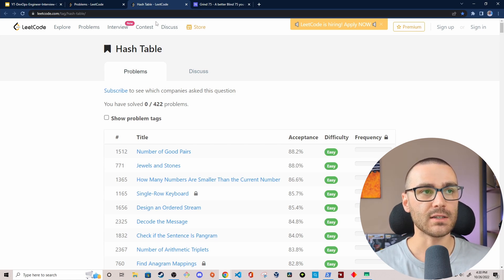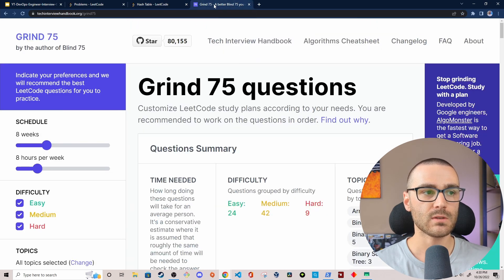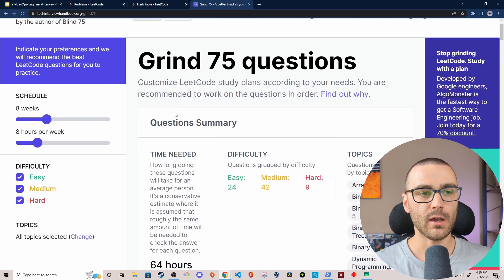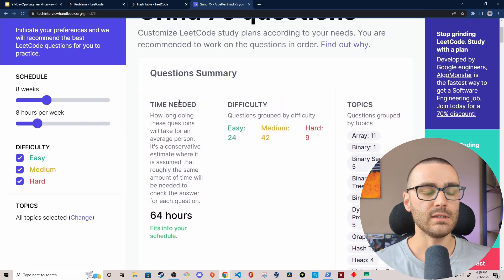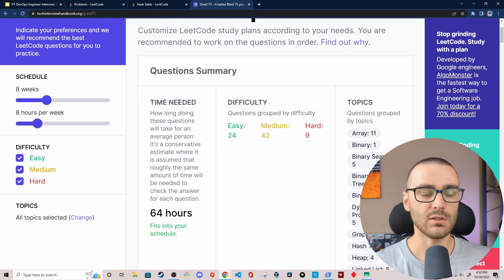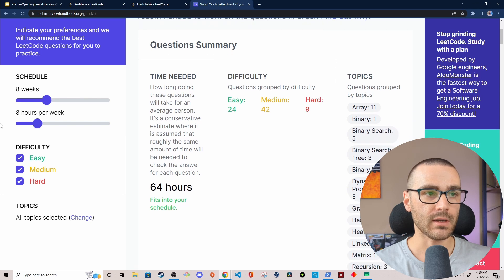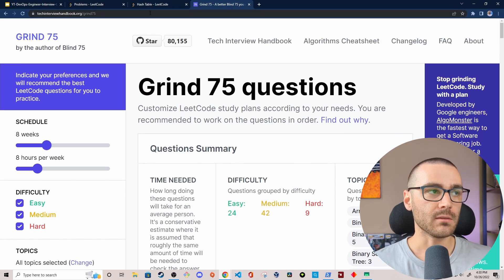So this is the way that I've studied for coding challenges. I studied per category. I narrowed the categories down to the ones that I listed in the presentation. And then on top of that, there's this site Grind 75 questions. This also helps you narrow the number of questions that you want to study for by difficulty, by topic, and also by your schedule as well. So this was also very helpful and something that I utilized to study for my interviews.